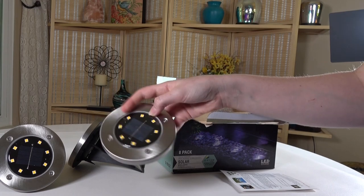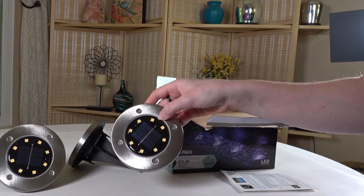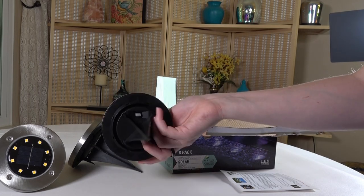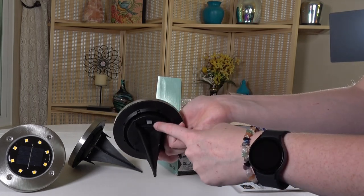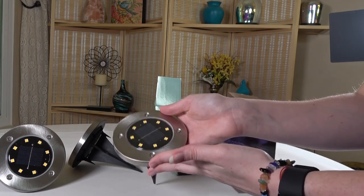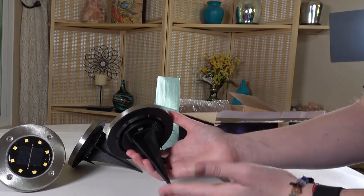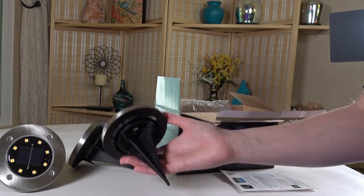And like I just mentioned the top is the eight solar LED lights. The on/off button is on the bottom. And these LED lights are a warm white. And as you just saw this assembly is fairly easy.